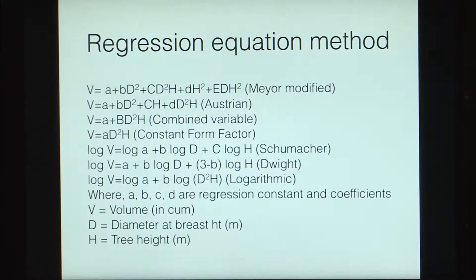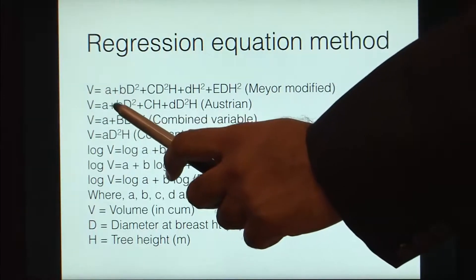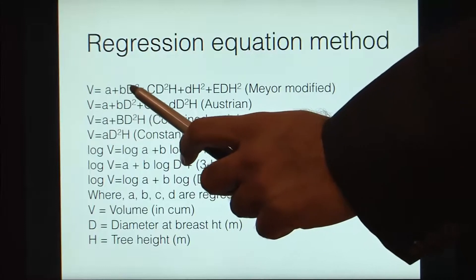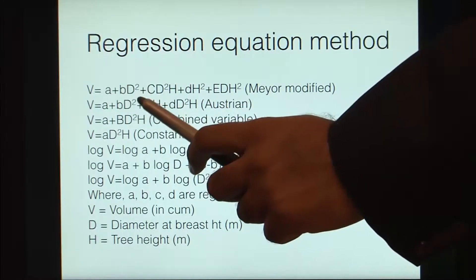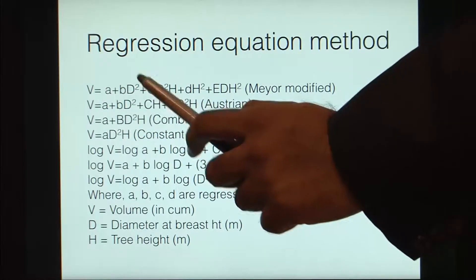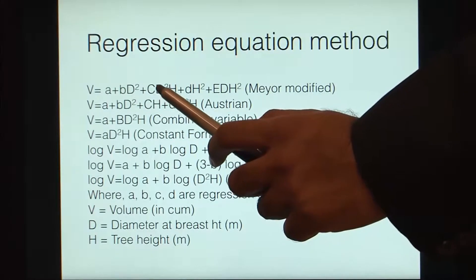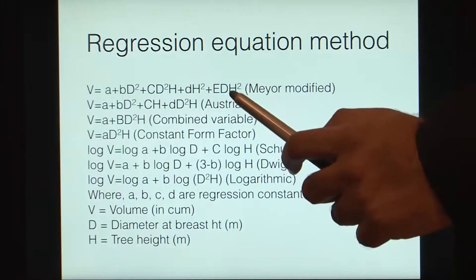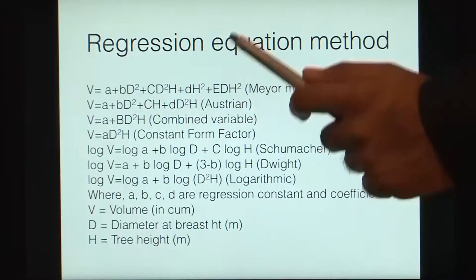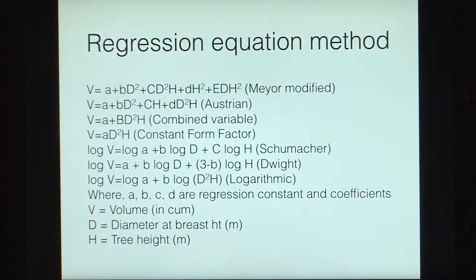Another method to find a general volume table is the regression equation method. Suppose we are using two variables, the diameter and the height. We can write general formulae such as: volume = a + b·d² + c·d²·h + d·D·h², where d² appears because volume varies as d². We write any sorts of regression equations, then fit our calculated values from the selected trees to the regression equation to get all the constants.